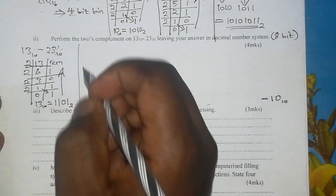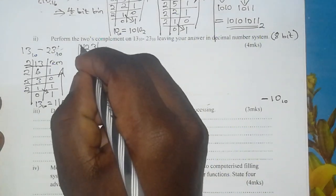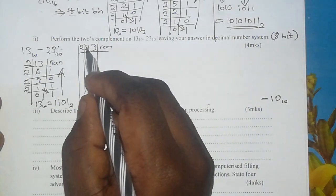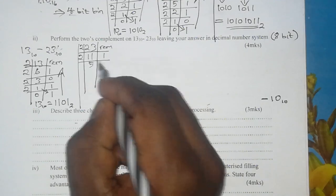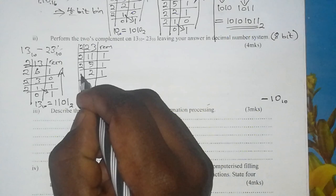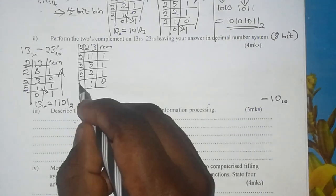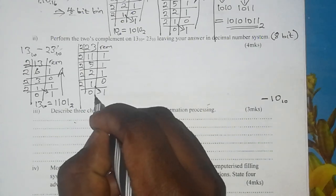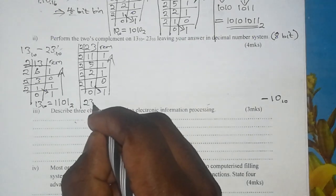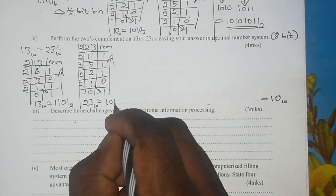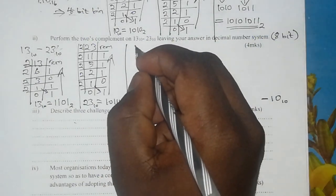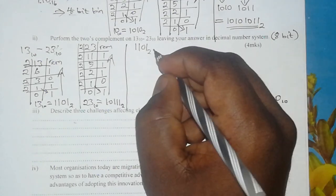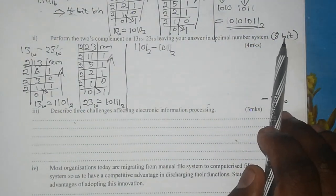Next, we work out 23. Dividing 23 by 2 and noting the remainders: 2 into 23 is 11 times with remainder 1, 2 into 11 is 5 times with remainder 1, 2 into 5 is 2 with remainder 1, 2 into 2 is 1 with no remainder, 2 into 1 is 0 with remainder 1. Reading in reverse, 23 base 10 is 10111 base 2. We can rewrite the sum in binary: 1101 minus 10111 base 2. Now, remember — 8-bit system. We rewrite each number with 8 bits by adding insignificant zeros to the left.